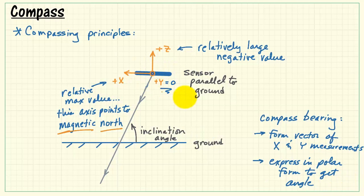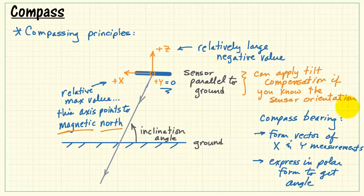Now in terms of compass bearing in general, we form a vector of the X and Y measurements, and then express those in polar form to get the angle. It is possible to apply tilt compensation if you know the sensor orientation, but that's a little bit more difficult procedure.